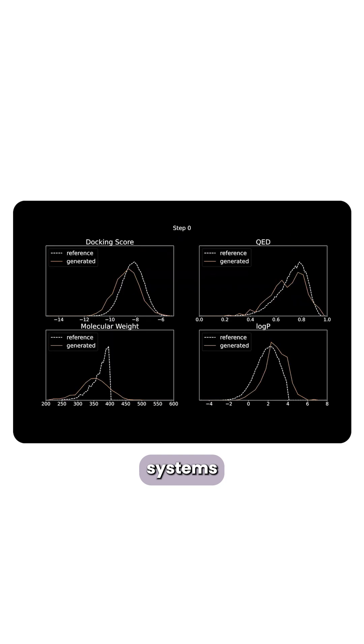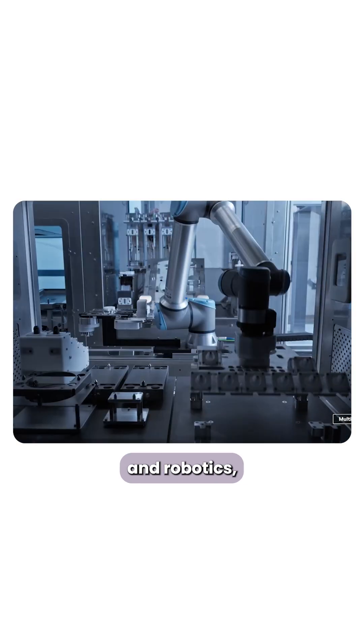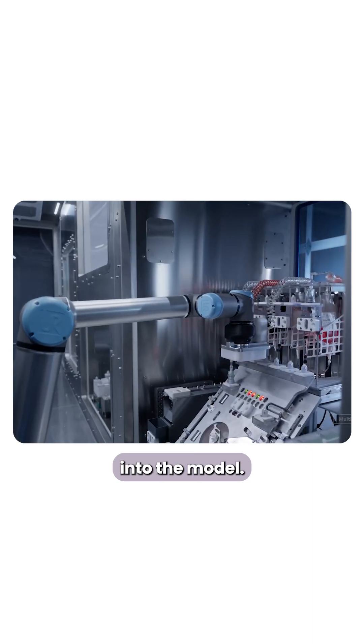Then, agentic AI systems coordinate the rest. They hand those candidates to lab automation and robotics, run the physical validation, and feed the results back into the model so it gets more accurate with every loop.